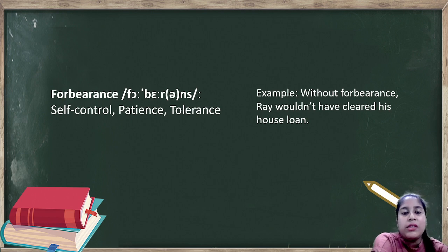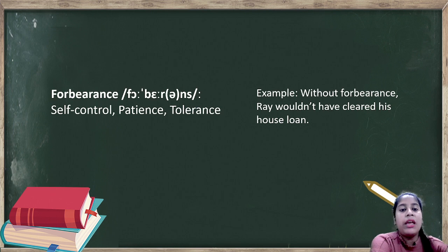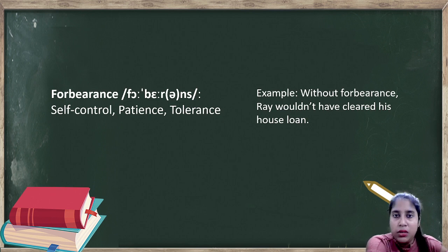Next word is forbearance. Forbearance means self-control, patience, or tolerance. Example: Without forbearance, Ray wouldn't have cleared his house loan. You can use these words - self-control, patience, tolerance - but forbearance is a better word. It can be used as a synonym for these words or in place of these words. It's better vocabulary.